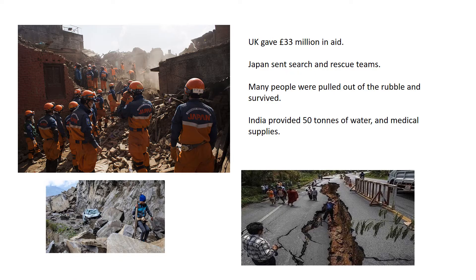Japan, as an advanced country very used to dealing with large earthquakes, sent in search and rescue teams who were involved in pulling many people out of the rubble — people who then survived. India also provided 50 tons of water and medical supplies, so there were definite positives in the short-term international response.